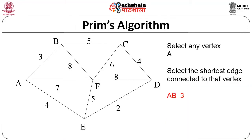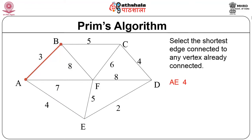In the Prim's algorithm walk-through, you select any vertex — let us assume we select A. Select the shortest edge connected to A, which is A-B with weight 3. Now you have to start from either A or B and select the next shortest edge. B has edges of weight 5 and 8, while A has edges of weight 4 and 7. So 4 is selected — choose the shortest edge connected to any vertex already in the tree.